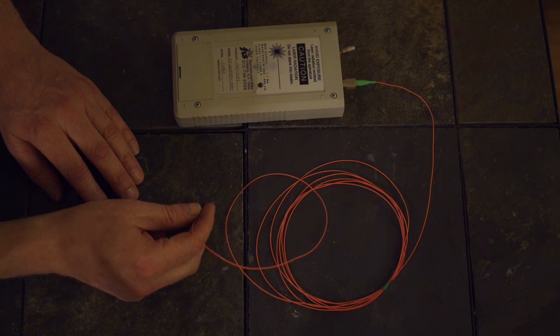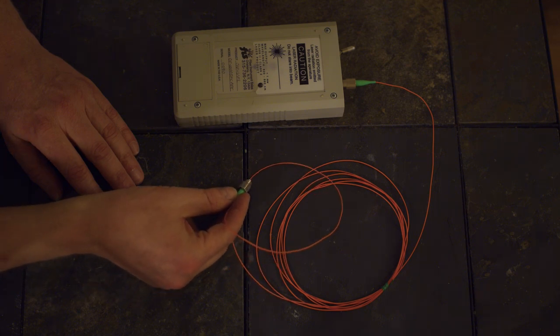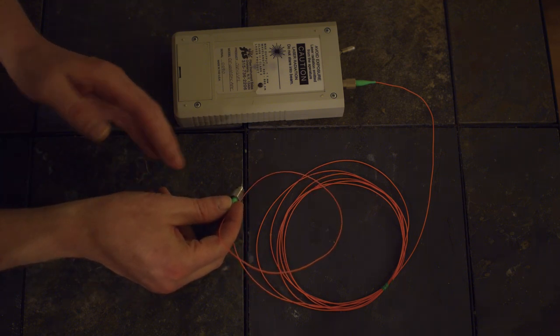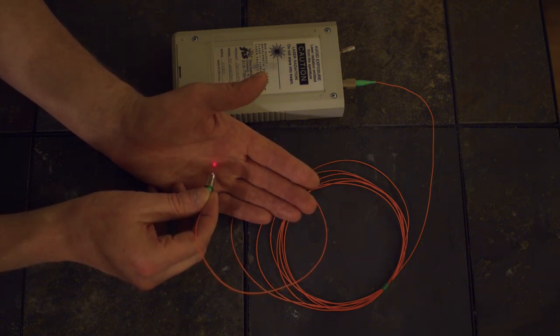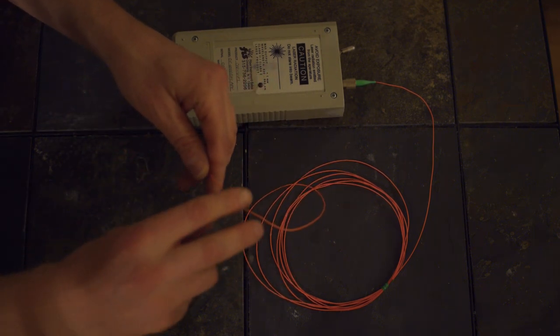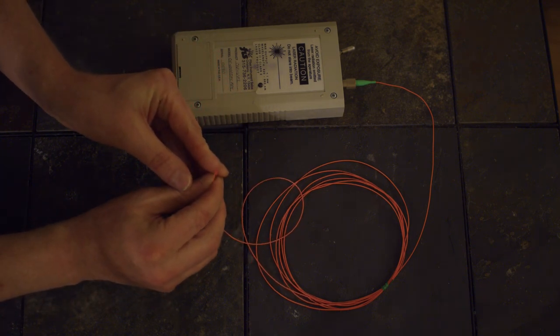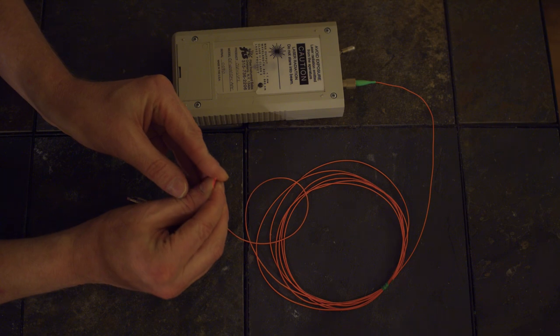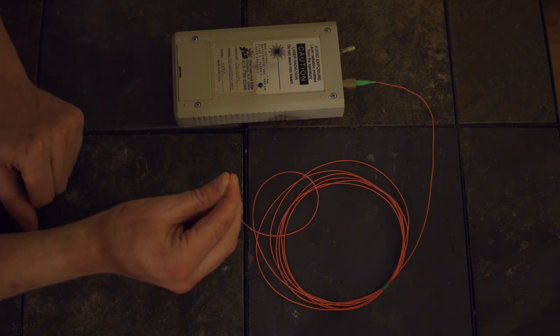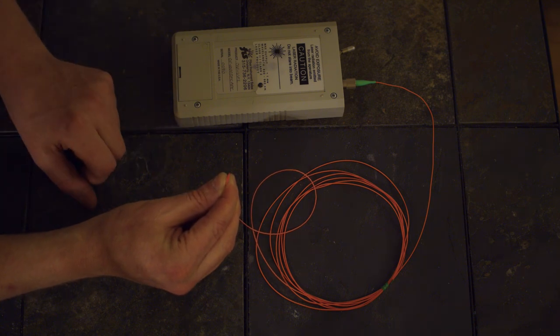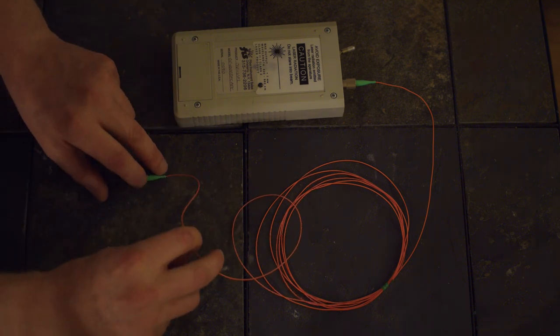I have a visible LED laser hooked up to one side of the cable, and as you can see, it is coming out the other side as expected. But if we now introduce a sharp bend in the cable, you can see that most of the light is now escaping out of the cable. Because of the sharp bend, the light is suddenly striking the cladding nearly head-on, resulting in it crashing right through.